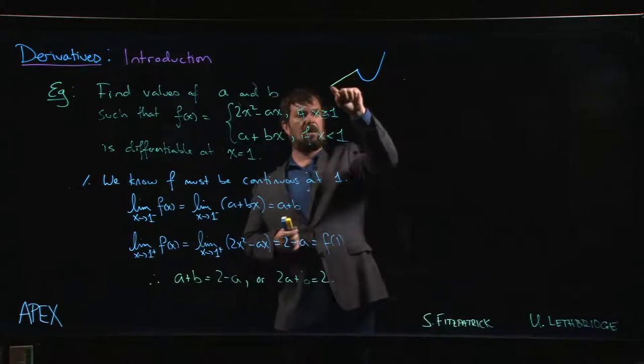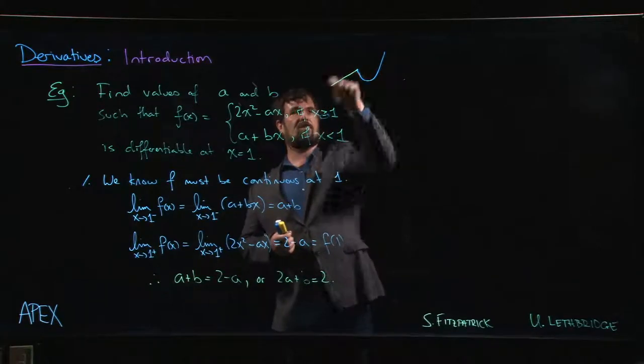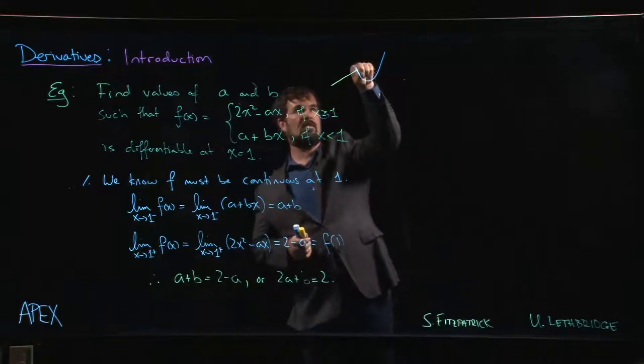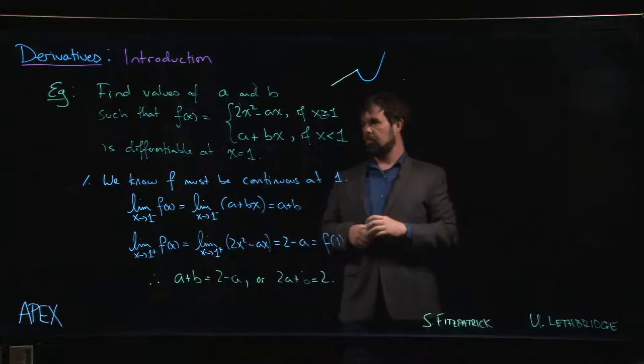But the slope might be wrong, right? So now we want to try and adjust the slope, bring it around until the slope of the line matches the slope coming in from the other direction. And that's where the derivative comes in.